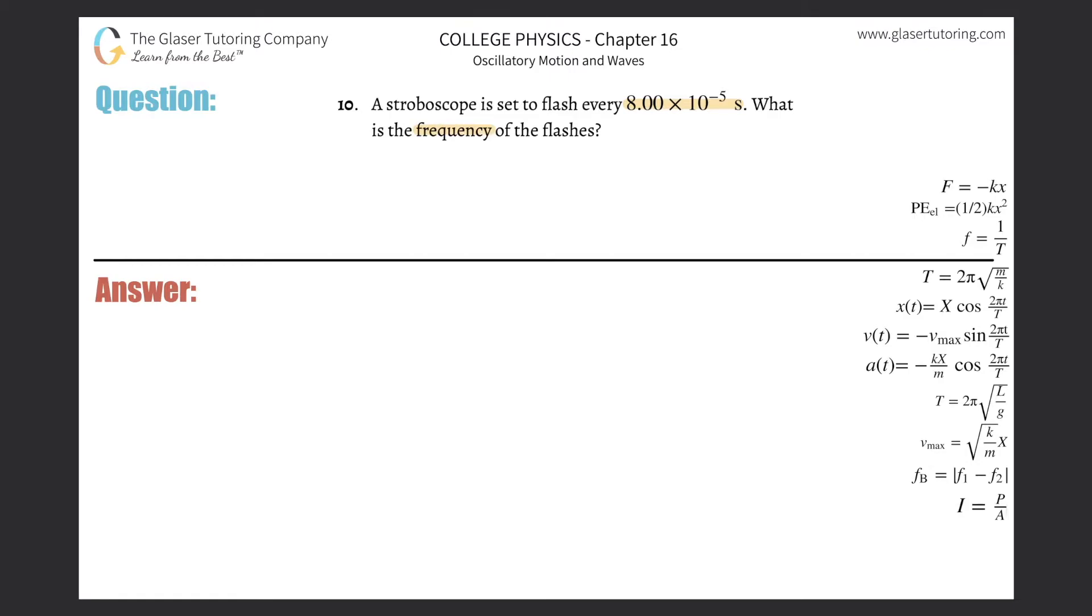Well, we have to find frequency, and let's start with this general formula. Frequency is 1 over the period. So the question is, what is the period? And the period is basically the time it takes, time of one cycle.